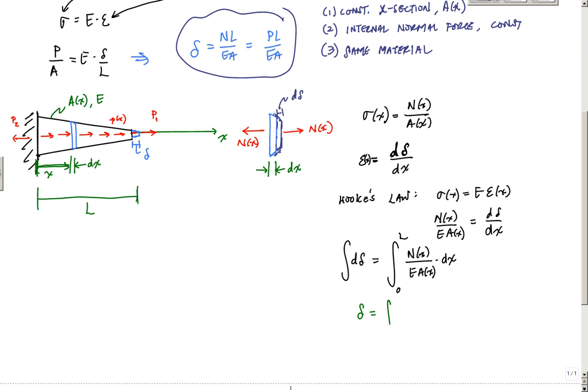And it would just tell me that this deformation, delta, is equal to this integral right here, N of x, EA of x, dx, right here. And this would be it. And this is kind of, this is my general deformation. This is my general equation for deformation of an axially loaded member.